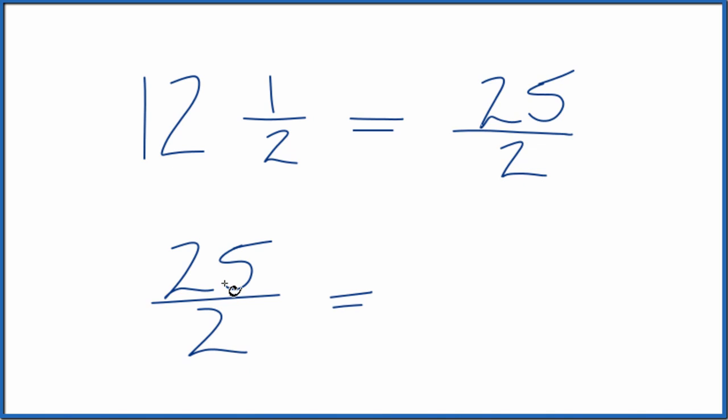2 goes into 25 12 times. 12 times 2 is 24, and we have 1 left over. Bring the denominator across, we get 12 and a half. That's what we started with, so we know we did this correctly.